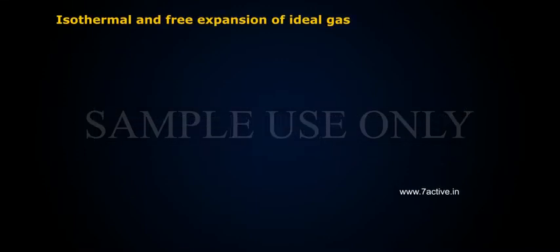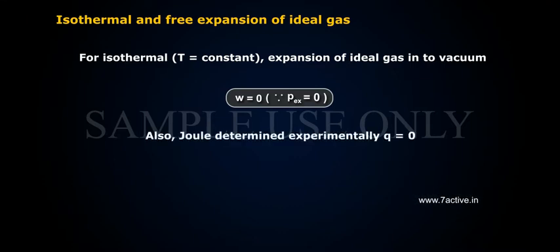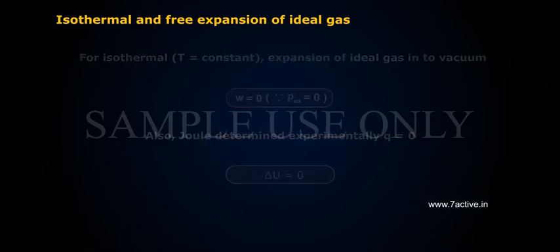Isothermal and free expansion of ideal gas: For isothermal (T equals constant) expansion of ideal gas into vacuum, W equals zero since PEx equals zero. Also, Joule determined experimentally Q equals zero. Therefore, delta U equals zero.